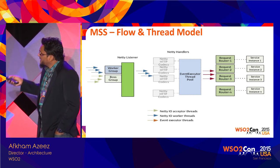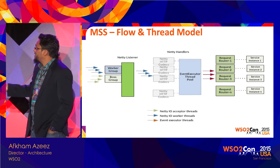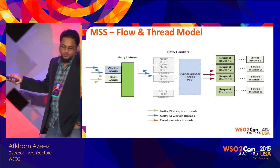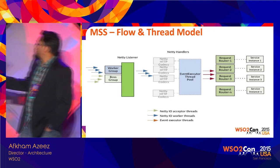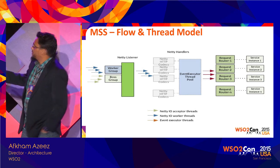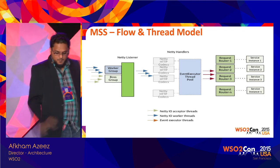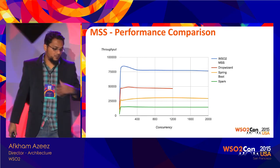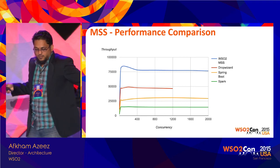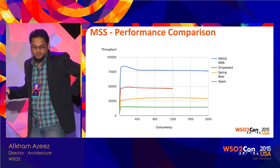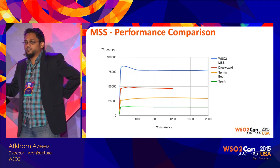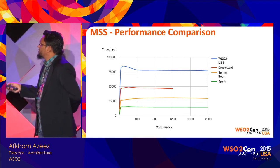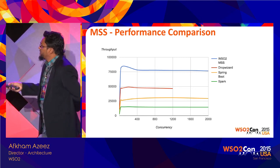If you define the APIs to handle streaming, we stream it directly from Netty to your service. Some performance figures — this is ongoing work. We've compared MSS with other frameworks, and MSS is right at the top. We have Dropwizard, Spring Boot, and Spark Java in the comparison. These are throughput figures we are seeing. For some reason, Dropwizard at a concurrency of 1,200 started giving errors — we need to look into that further. Things are looking good.